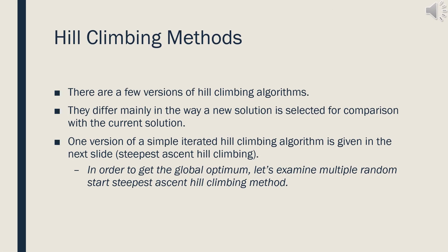A few versions of hill-climbing algorithms exist. The main difference is the selection criterion of a new solution for comparison with the current solution. One version, which is steepest ascent, is given in the next slide. In order to get the global optimum, let's examine the steepest ascent hill-climbing method with multiple random starts.